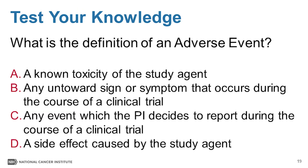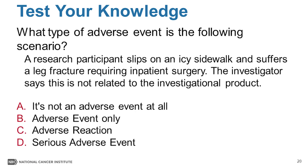Let's test your knowledge. What is the definition of an adverse event? Is it A, a known toxicity of the study agent? B, any untoward sign or symptom that occurs during the course of a clinical trial? C, any adverse event which the PI decides to report during the course of a clinical trial? Or D, a side effect caused by the study agent? The correct answer is B. Remember, toxicity and side effect imply an attribution or relationship, which is not part of the definition of an adverse event, and the PI needs to follow the definition of an AE rather than make that decision on their own.